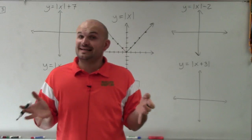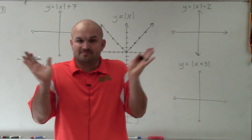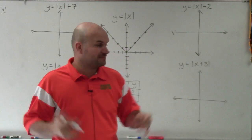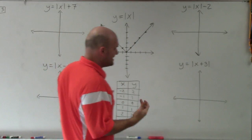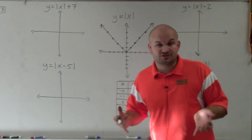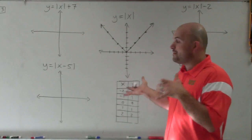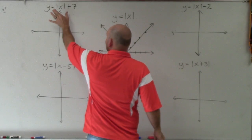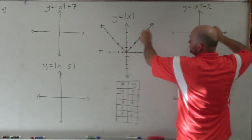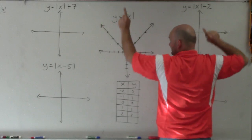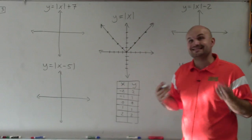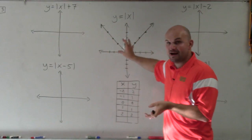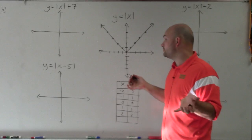We are going to get into different videos when that shape is going to be stretched or compressed. But for right now, what we're basically going to do is just talk about the transformations — just how we're going to take that graph and shift it. You can see in all of these equations I have the absolute value of x, but I'm also adding and subtracting numbers outside and inside of it. So how is that going to affect the graph?